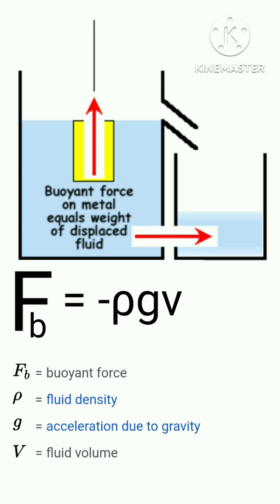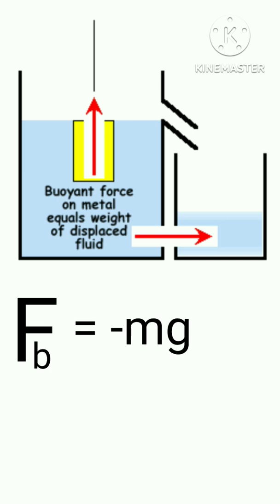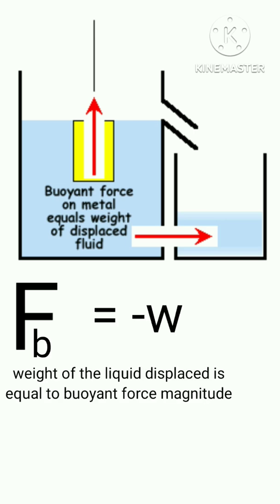Here, we multiply rho into V, then we get mass because density into volume is equal to mass. So Fb is equal to minus m into g. So mg is nothing but weight. So weight of the liquid displaced is equal to buoyant force magnitude.